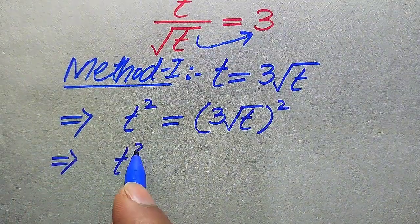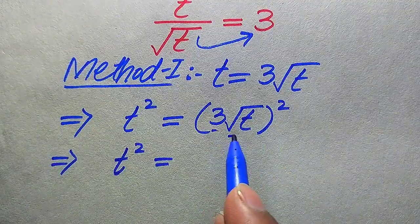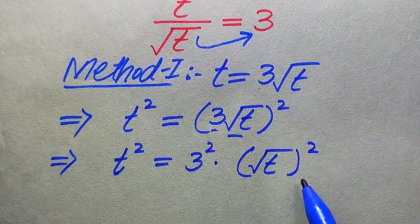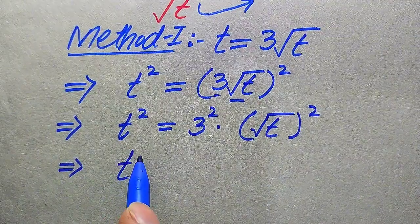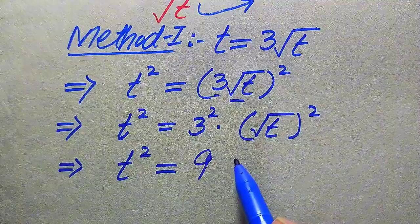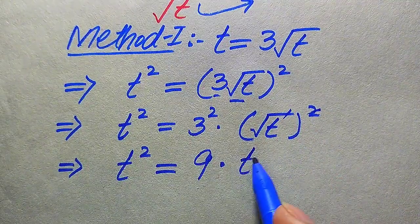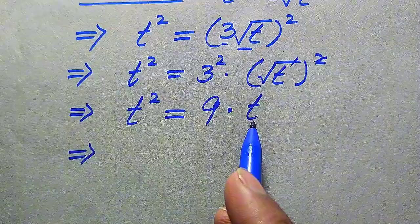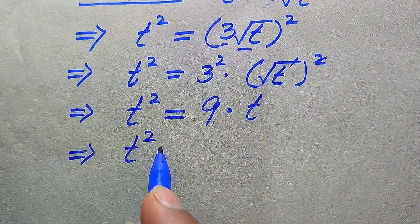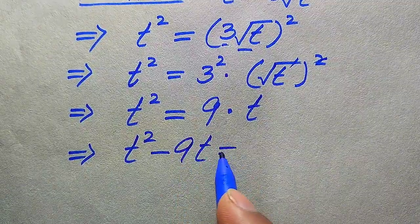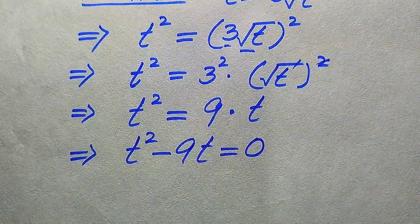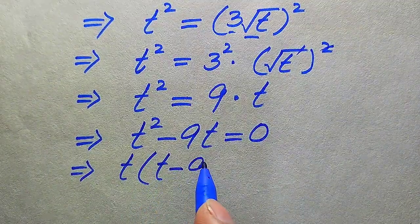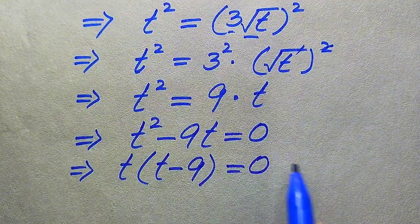We apply the square separately to both factors: t squared equals 9 times t. Moving 9t to the left-hand side gives t squared minus 9t equals zero. Both terms involve t, so we factor out t, giving t times (t minus 9) equals zero.